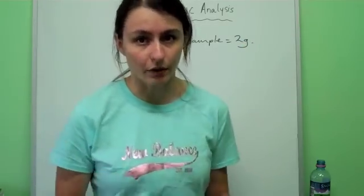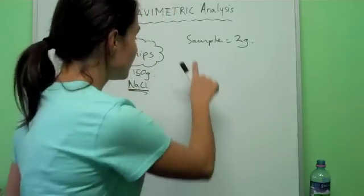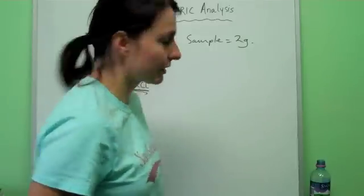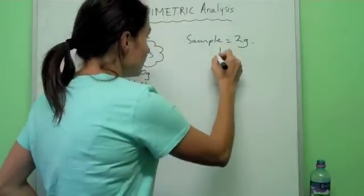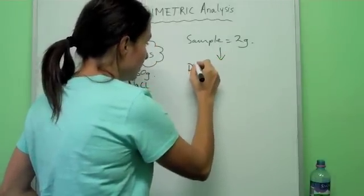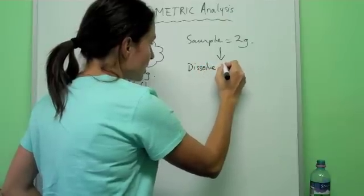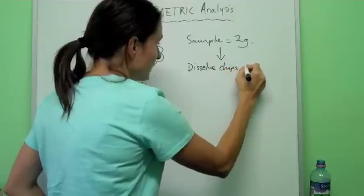Later on we'll do more calculations etc. Okay so you might take a 2 gram sample of chips and maybe you have more decimals just to make it more accurate etc. And what you do is you dilute or dissolve chips in water.